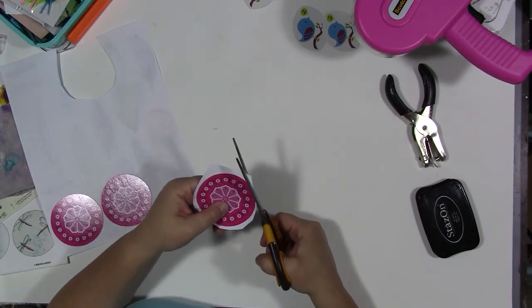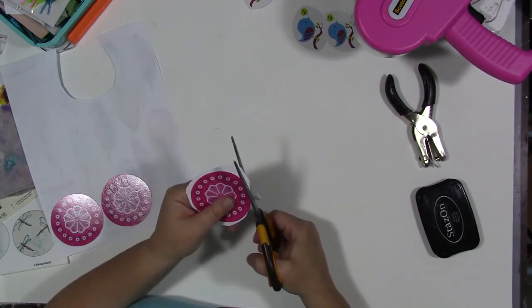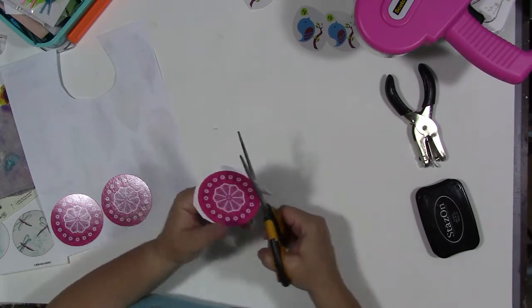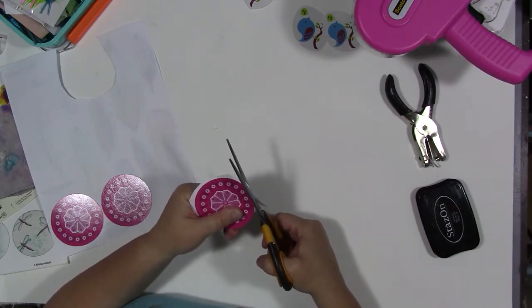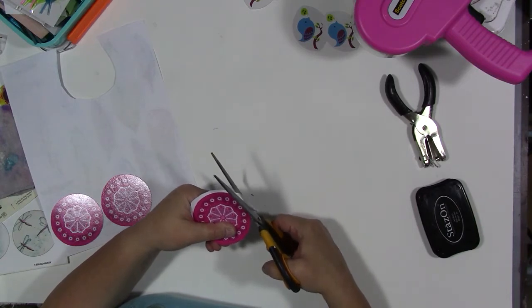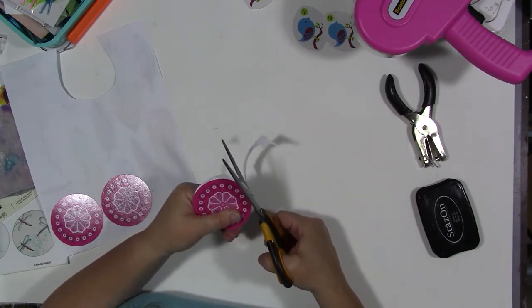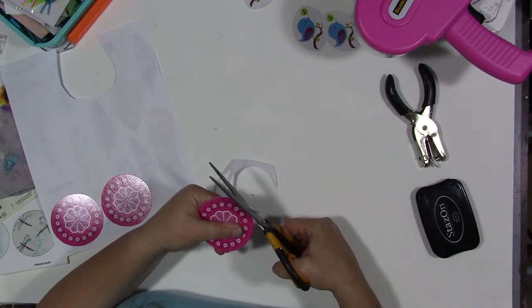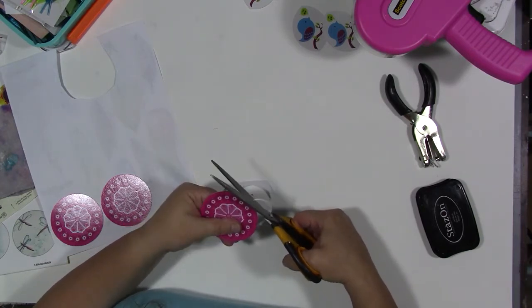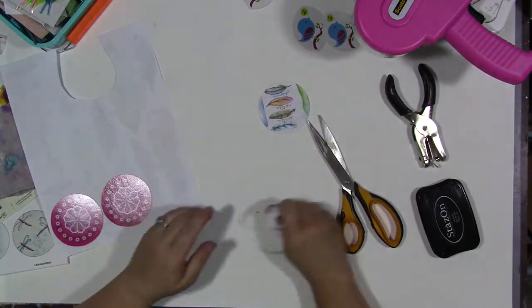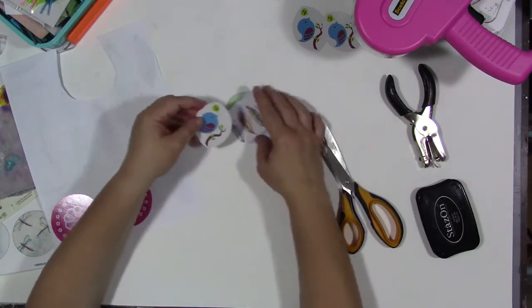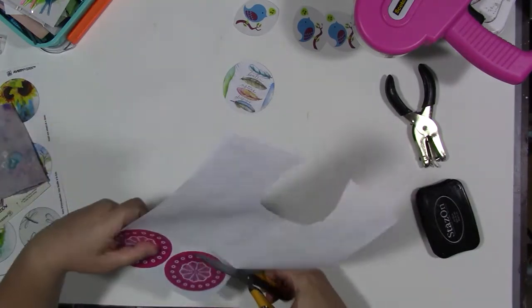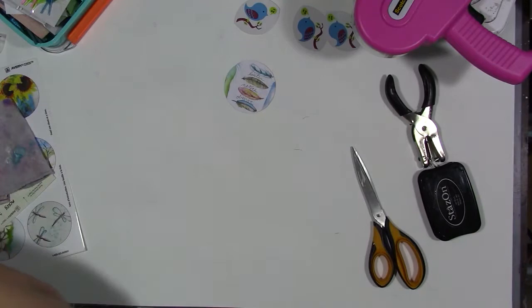All right, now let's cut those out. One of the reasons I wanted to use dry glue is because this is inkjet printer paper and if you get it too wet it is going to bleed. So we don't want that. I'm going to just carefully go around the edge.